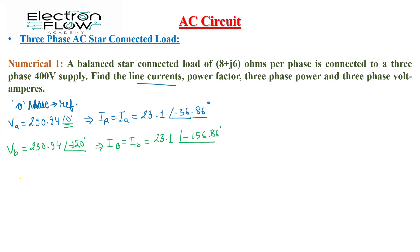Phase C is again 120 degrees apart from phase B, so VC equals 230.94 at an angle of minus 240 degrees. The corresponding current IC equals 23.1 at an angle of minus 276.86 degrees. Since line current equals phase current in a star connection, this is how we have calculated all the line currents.